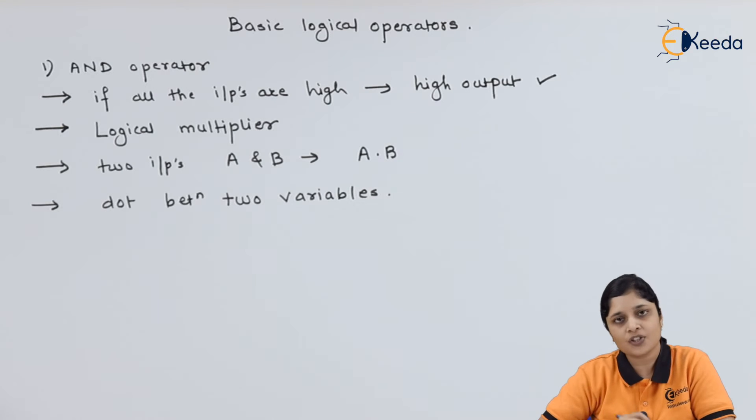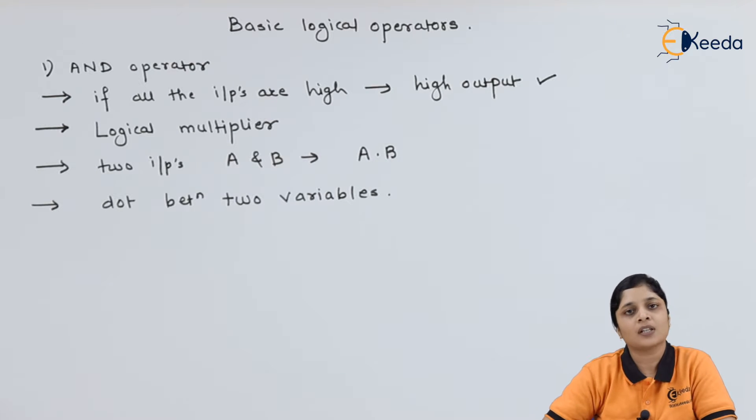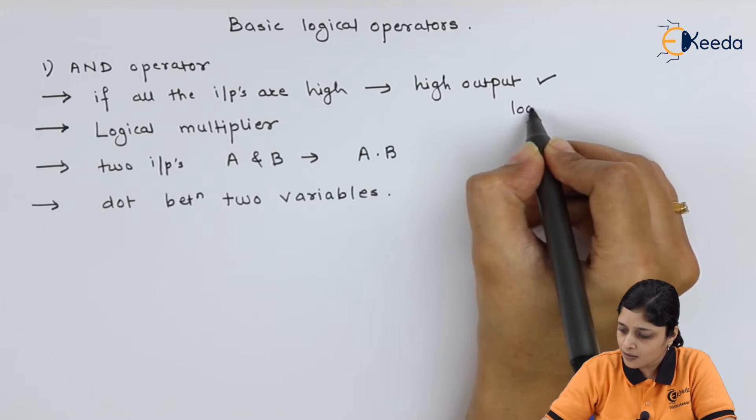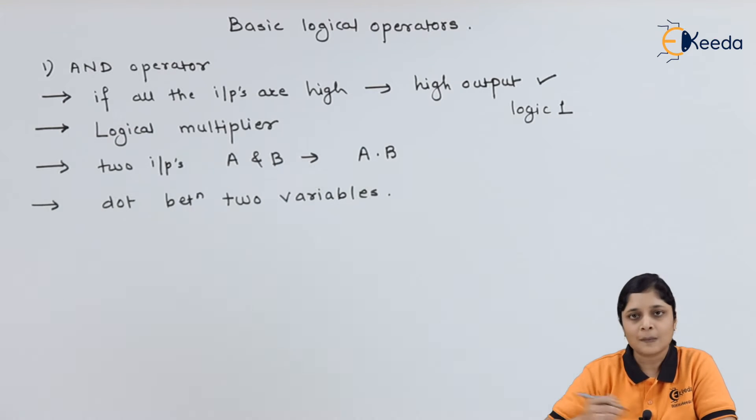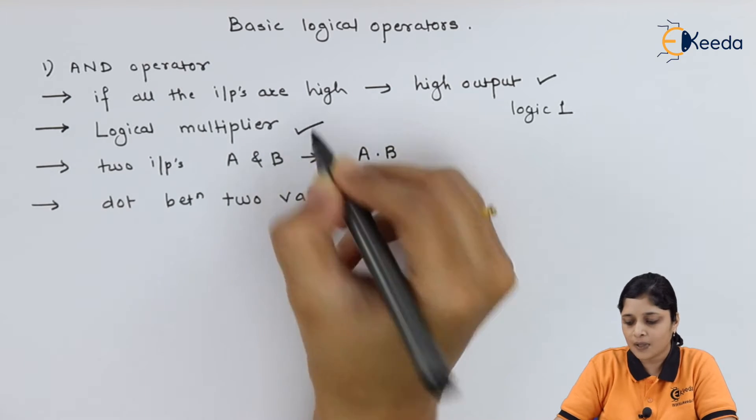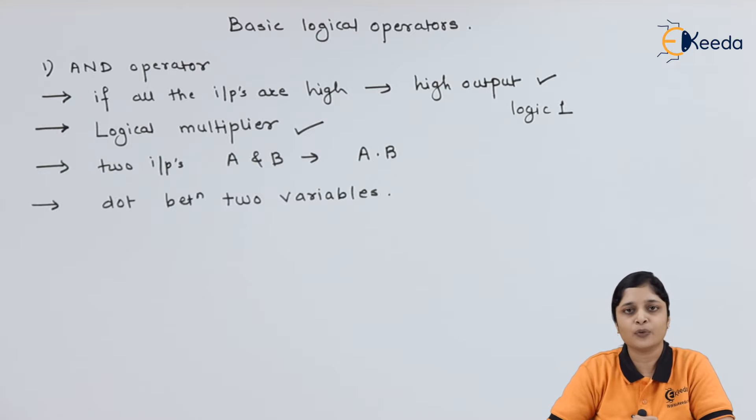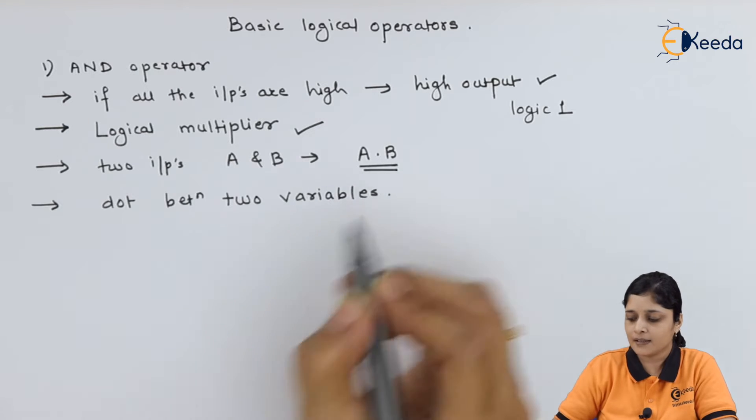This is the main feature. If you have many inputs, all the inputs should be high, then only you will get high output. High output means logic 1, otherwise you will get your output as low, that is logic 0. It is a logical multiplier, and if you have two inputs, then dot is required. Then only you will get A dot B, that is the operation of AND.